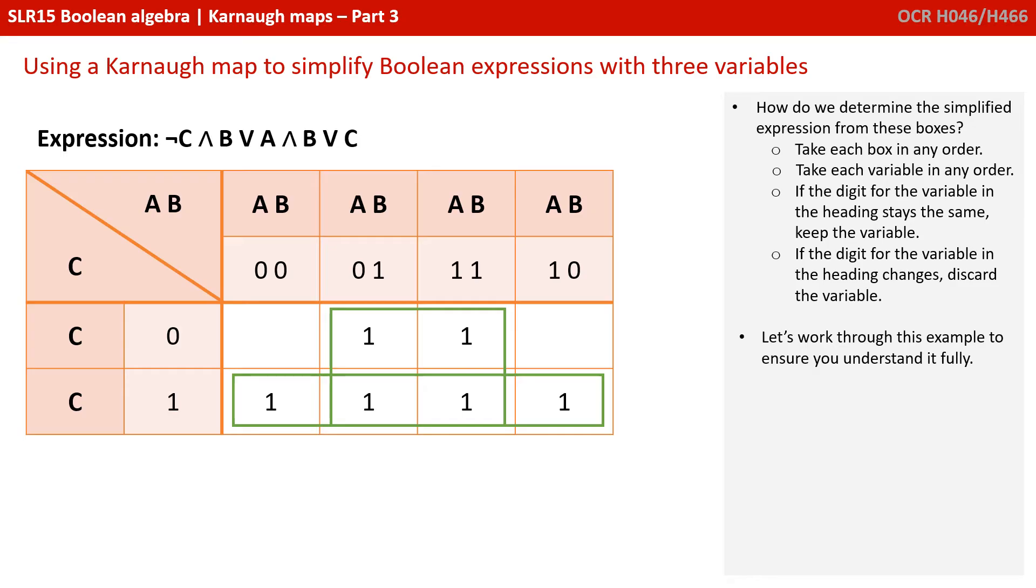So, take each box in any order you like, and then, for that box, take each variable in any order you like. If the digit for the variable in the heading stays the same, keep the variable. If the digit for the variable in the heading changes, discard the variable. Okay, let's work through this little algorithm with an example, so you fully understand what we're talking about here.